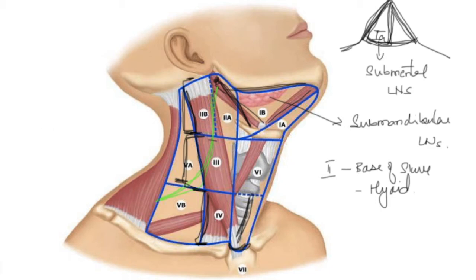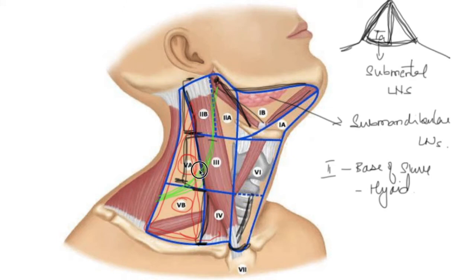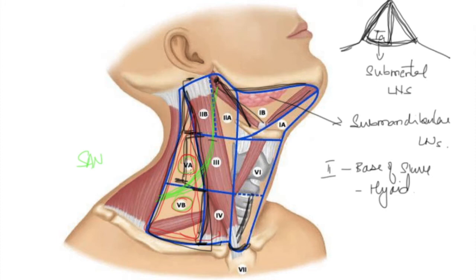Level 5 — the posterior triangle nodes — is drawn here in a different color. It is again divided into 5A and 5B, and the structure dividing them is the spinal accessory nerve. The borders of the posterior triangle are: the posterior border of the sternocleidomastoid anteriorly, the anterior border of the trapezius posteriorly, and the clavicle inferiorly. These are the limits for the Level 5 nodes.